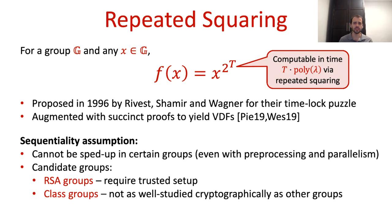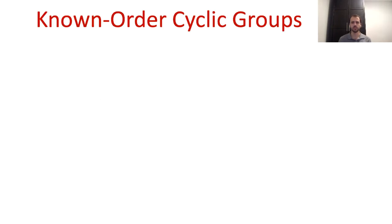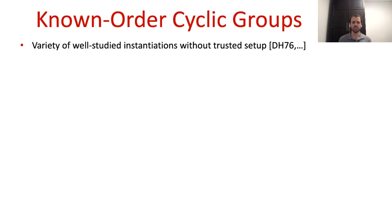And as a second candidate, we have the class groups of imaginary quadratic fields. These do not require any trusted setup, but they are not as well studied from a cryptographic point of view. With these caveats of RSA groups and class groups in mind, a natural direction to look at is that of cyclic groups. These groups have many possible instantiations, which are both very well studied cryptographically and do not require any trusted setup.